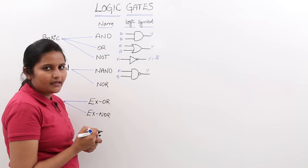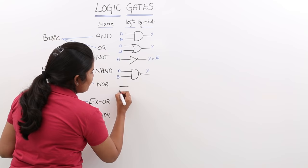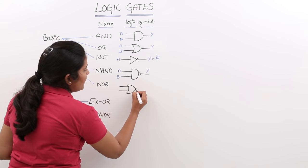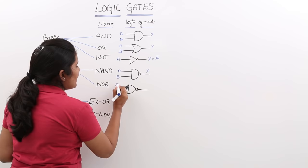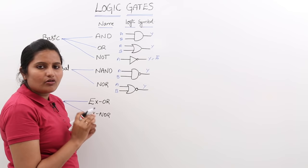For NOR gate, the logic symbol is somewhat similar to OR gate with a NOT bubble added. The logic symbol for NOR gate will be like this. This is somewhat similar to OR gate with NOT. Here also we may have 2 inputs and 1 output. You can observe that for each and every gate the output is only 1.